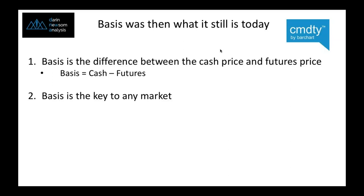We had to go through government hearings; they set up special variable storage rate programs for the wheat markets to try to fix things. If you just let markets lay out supply and demand, it'll take care of itself. Basis plays a huge role in that. When you see a major move like a collapse in basis, there is something wrong. On the other hand, when you see basis skyrocket, it tells us there's a short supply situation — folks are scared and can't cover demand needs. That differential between the cash and the futures market really tells us what's going on behind the curtain.